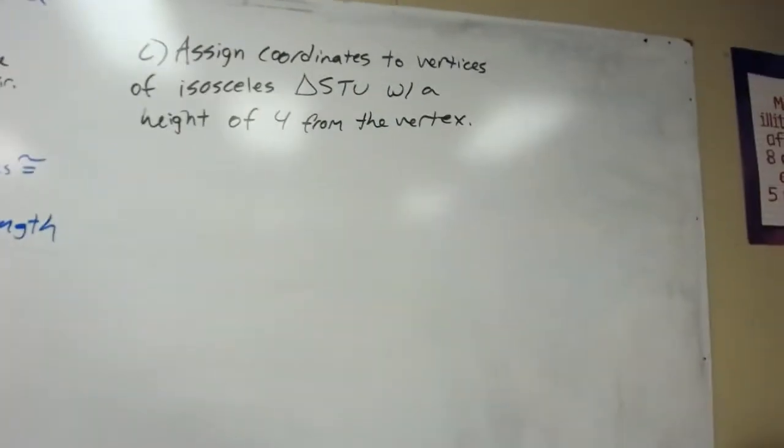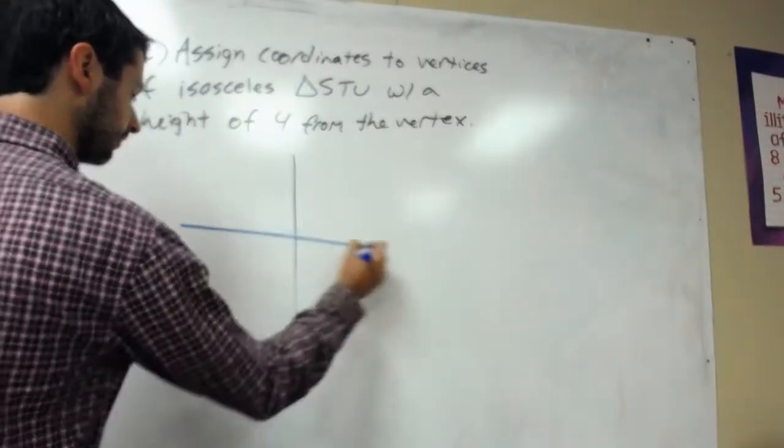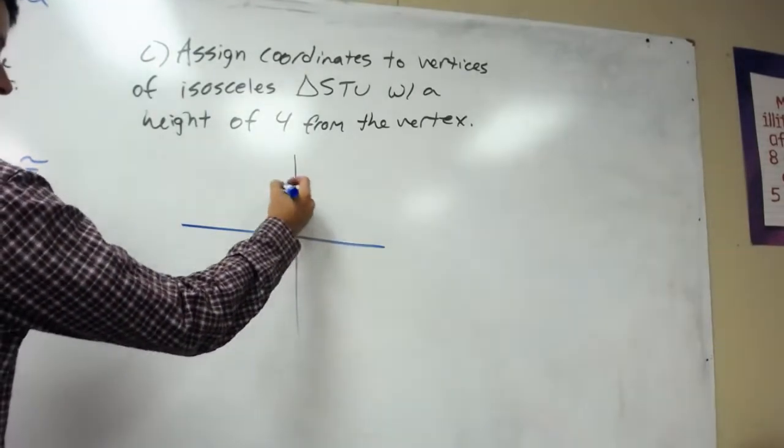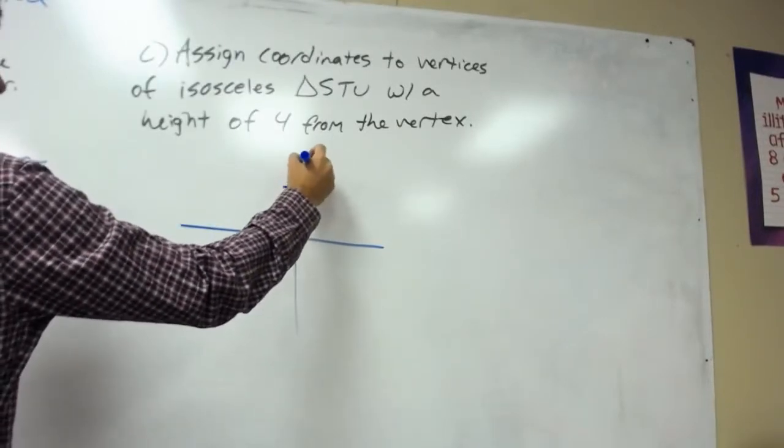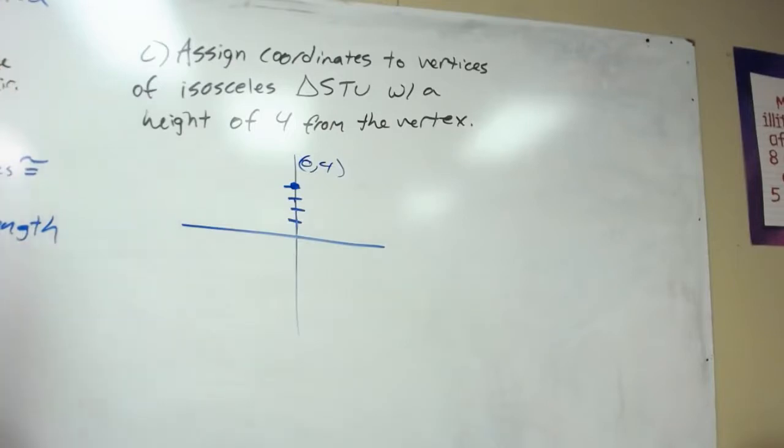Last coordinate proof we'll look at is example 3C. It says assign coordinates to vertices of isosceles triangle STU with a height of 4 from the vertex. So we've got to find coordinates for a triangle, Stu, with a height of 4 from the vertex. So it gives us this. It says the height has to be 4. So we'll call this (0,4). There's our height.